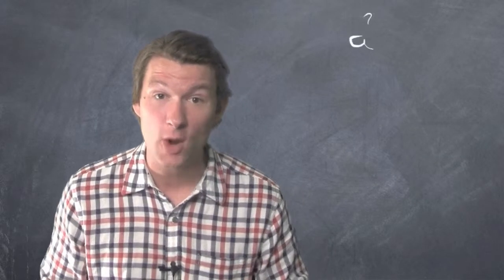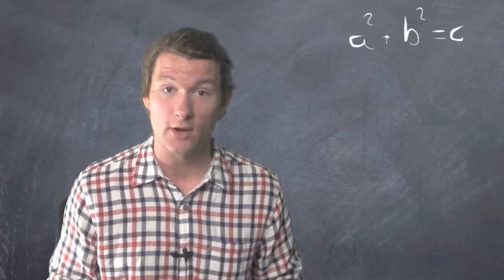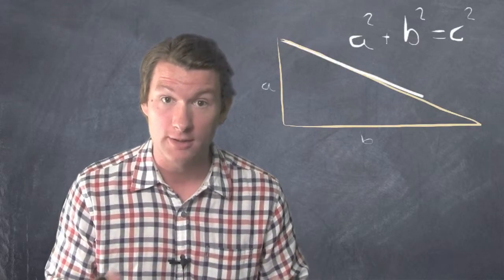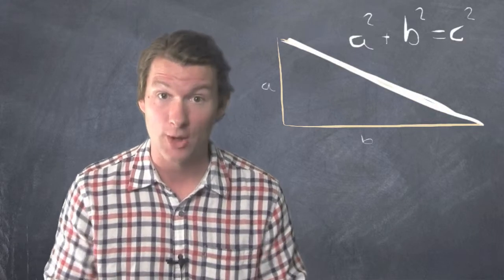The Pythagorean Theorem is A squared plus B squared equals C squared, and it's really useful if you know two sides of a right triangle and you're trying to find the third. Let me show you how it works.